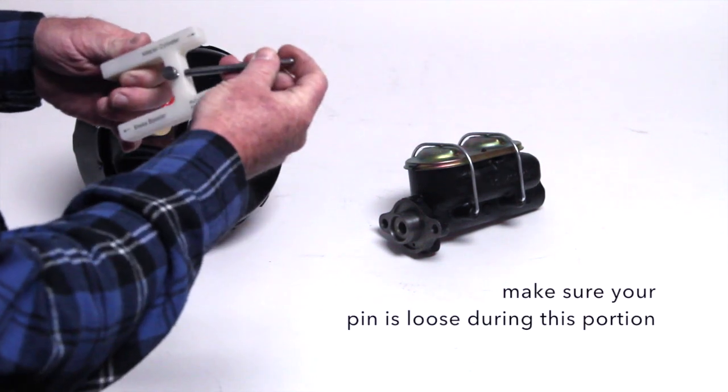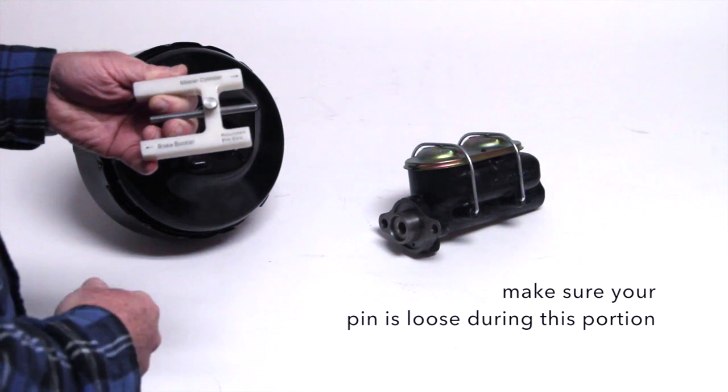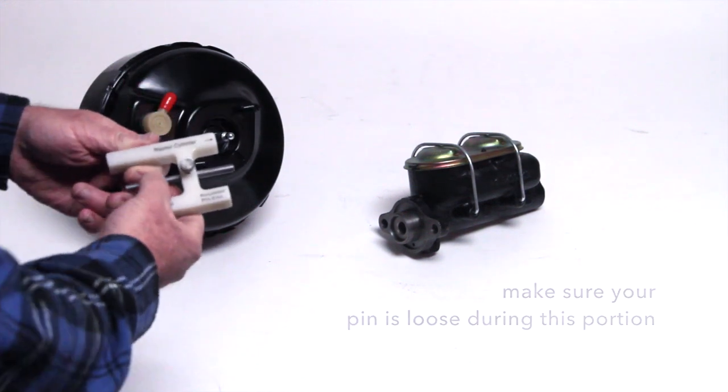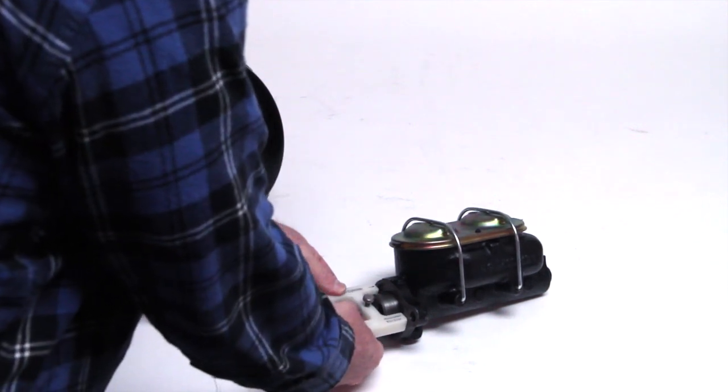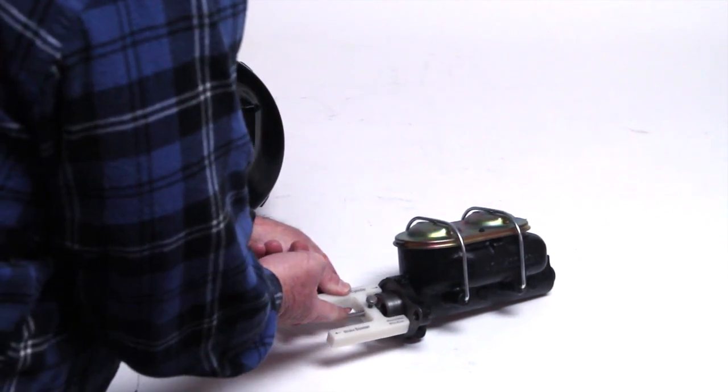So really quickly, all you're going to do with the pin loose, you're going to insert it into the master cylinder and push it all the way forward until it stops. Once it stops, you just tighten the knob right here.